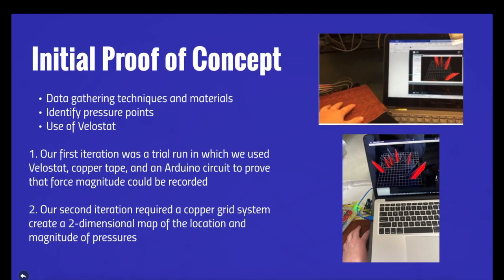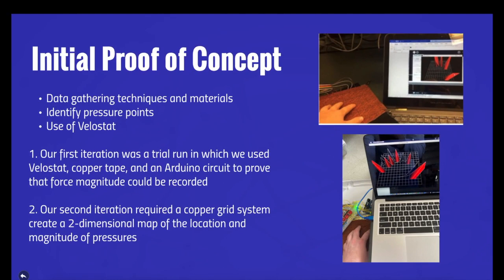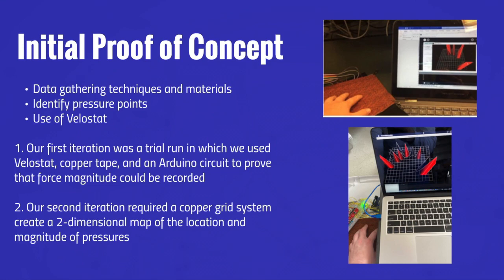Initially, we set out to find ways to involve innovative data-gathering techniques and materials into the fabrication of lower limb prosthetics. We identified a primary need to locate pressure points inside of the socket that can cause discomfort and bruising of the residual limb. After researching different materials and techniques that could help us achieve this goal, we settled upon using Velostat, a pressure-sensitive conductive material, to create a pressure-sensitive surface.